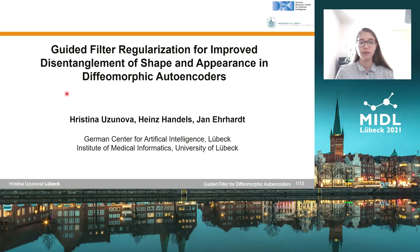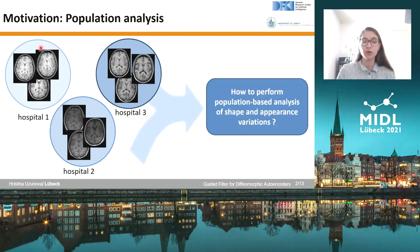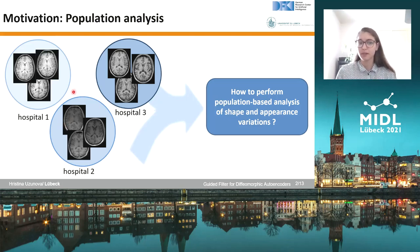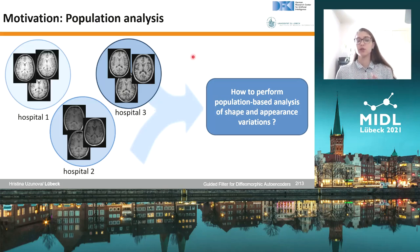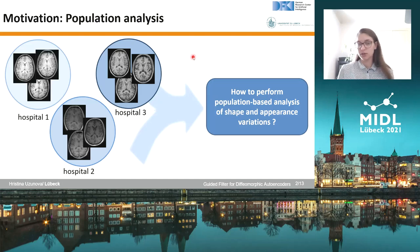Let's imagine the following situation. We have three hospitals that acquire T1 sequences of brain MRIs. However, they all use different devices, so the appearances of the acquired images are slightly different. We have different intensity profiles and different noise ratios. Now we want to perform population-based analysis on those images and be able to distinguish between shape due to normal anatomical variations and appearance variations that may be due to the different acquisition devices.